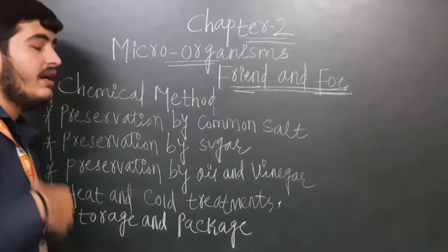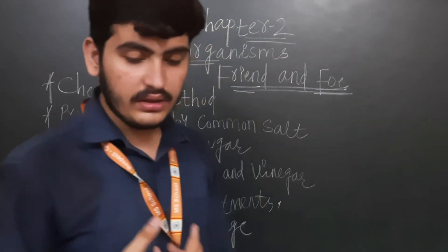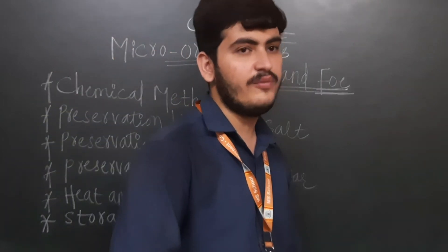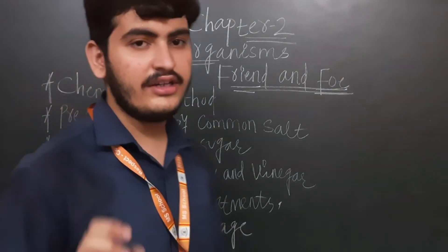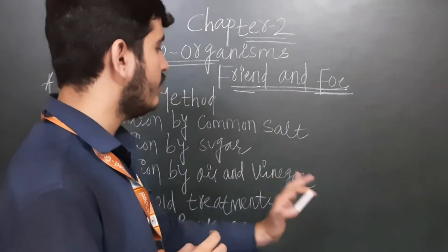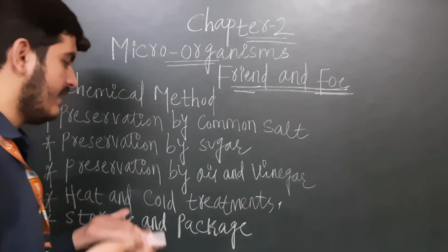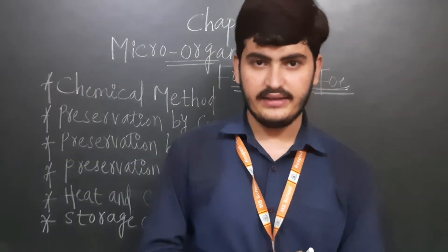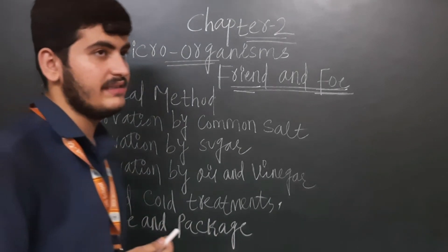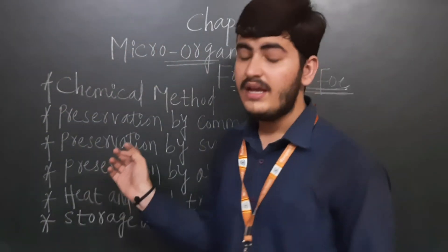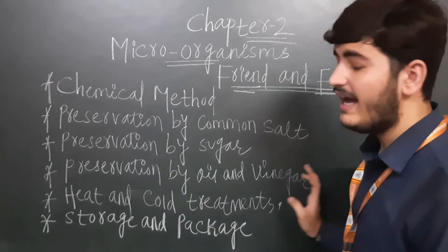Preservation by sugar is used in jams, jellies, and squashes. Sugar reduces moisture, which in turn reduces the growth of bacteria that spoil food. Preservation by oil and vinegar prevents the spoilage of pickles, as bacteria are not able to survive in an atmosphere where oil and vinegar are present, allowing food to be used for a long time.